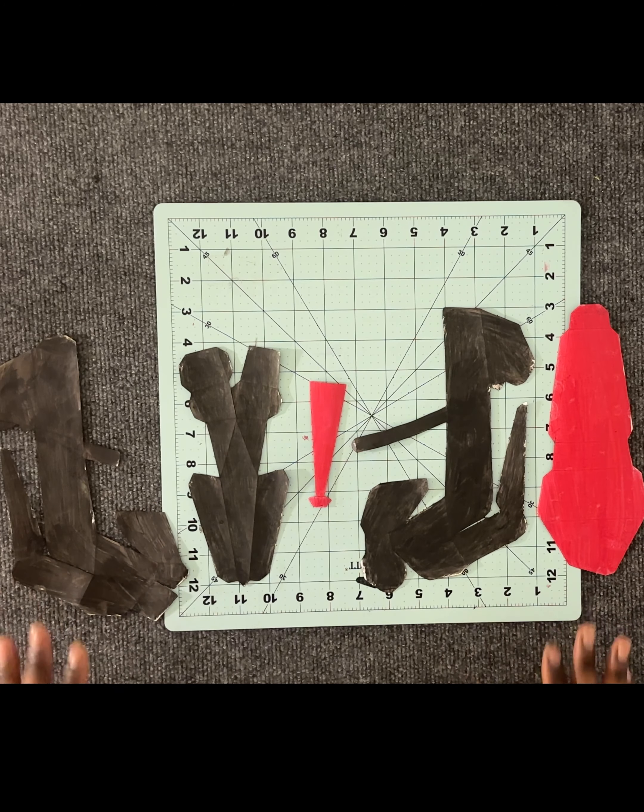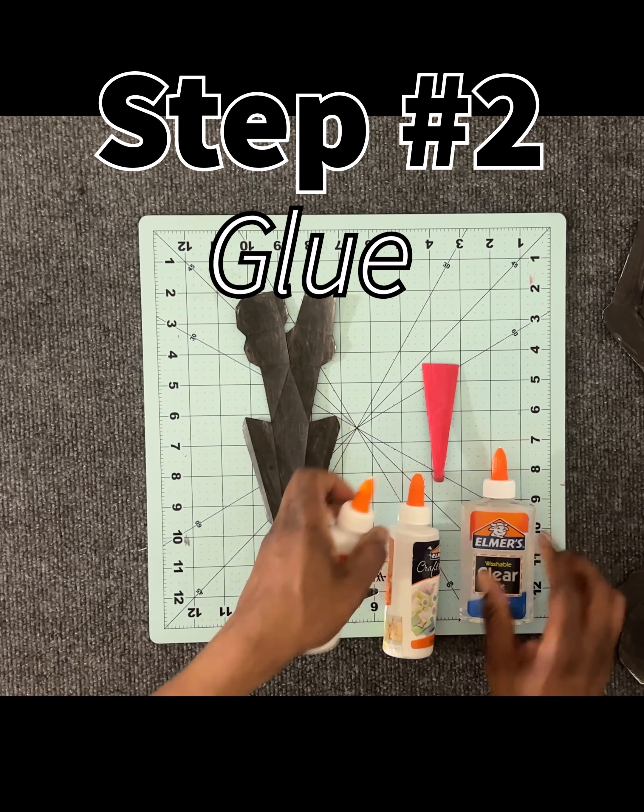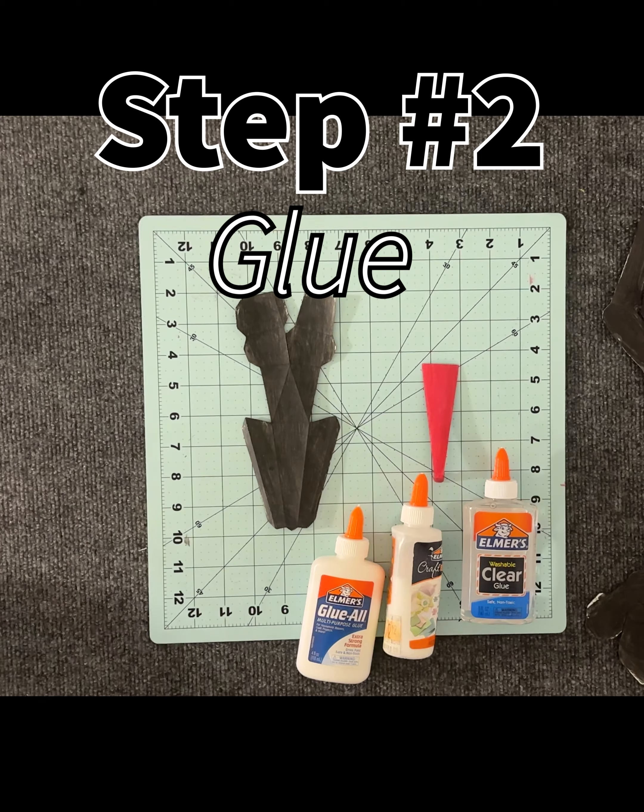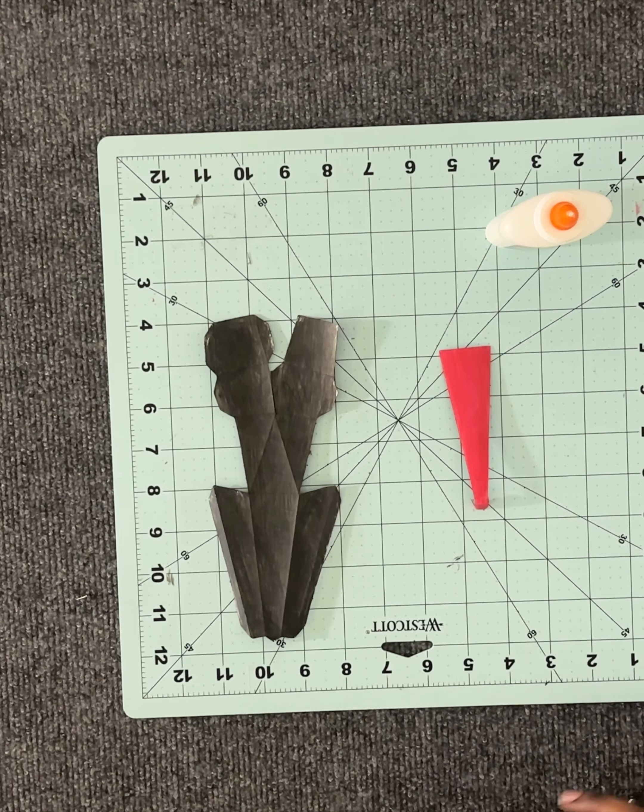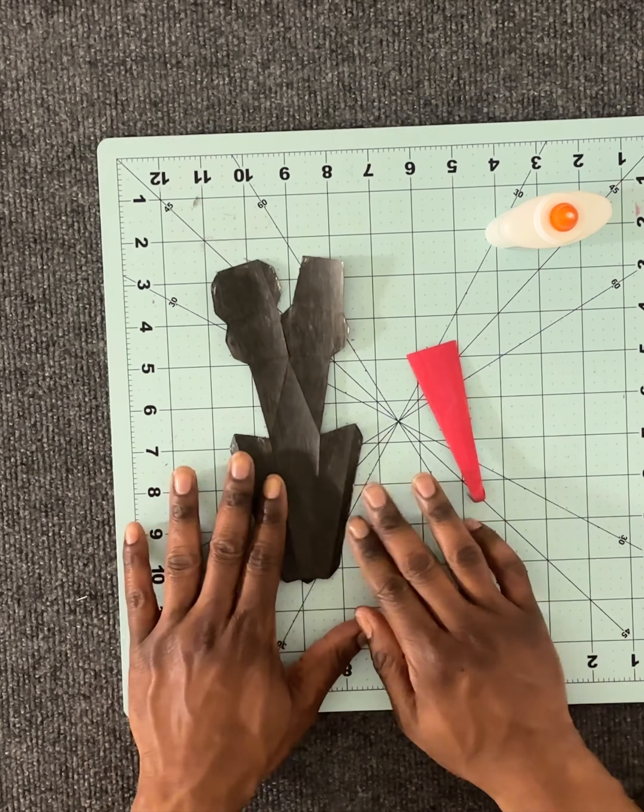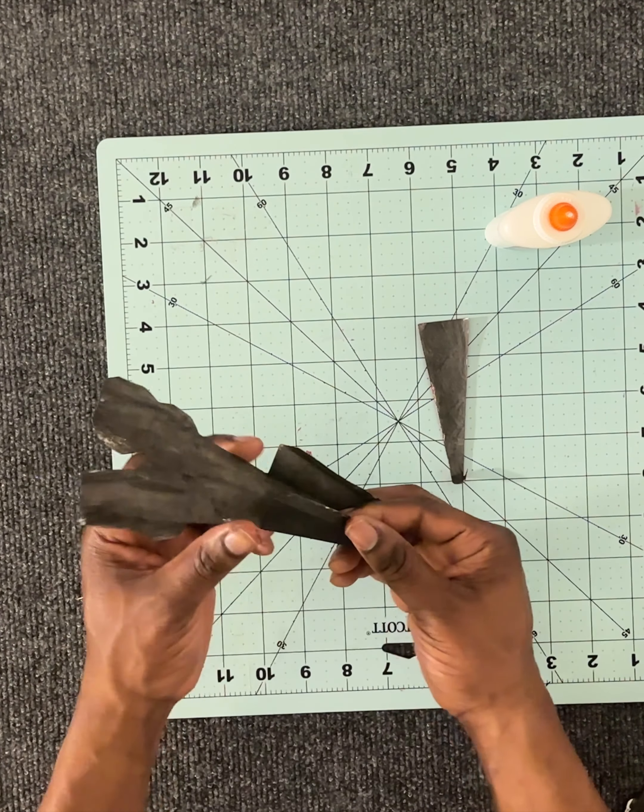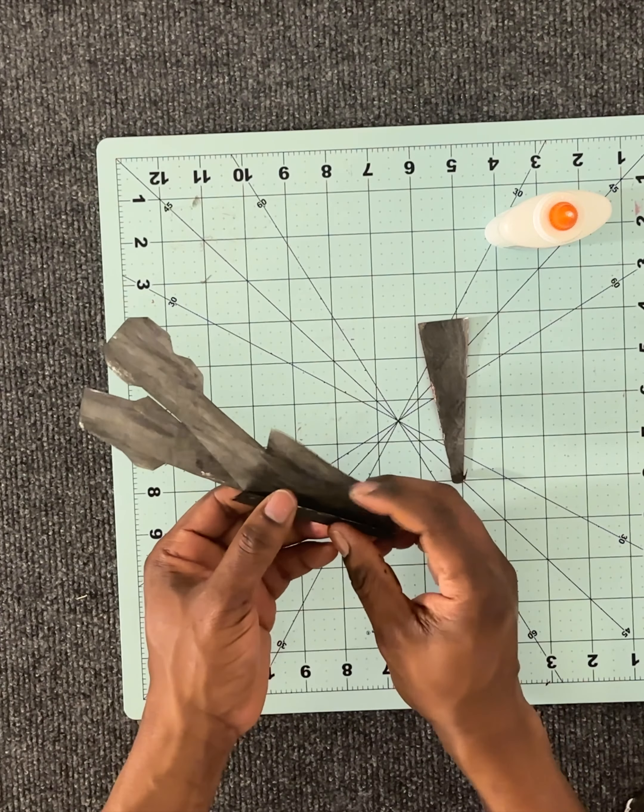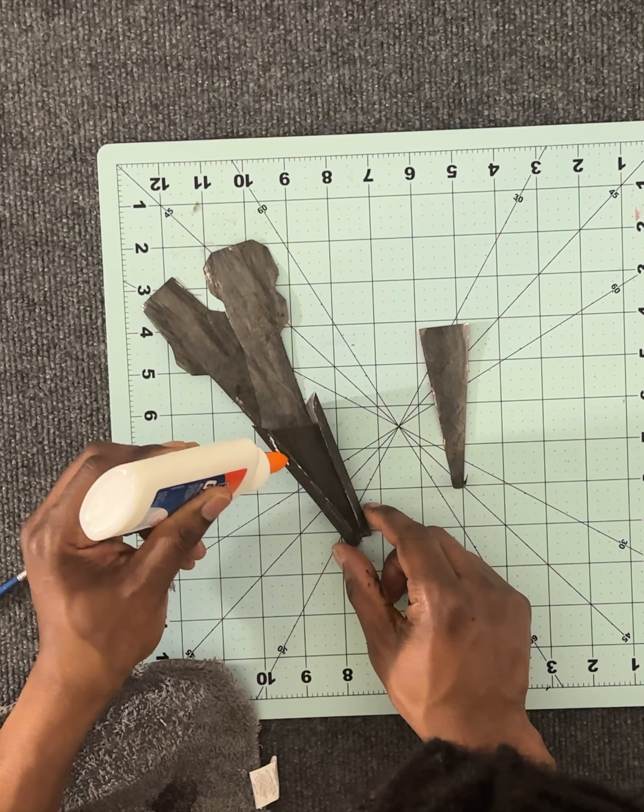As long as you got your pieces just like this you should be okay. Got my glue, plain white glue, that'll work perfect. The first thing I would do is put the heel together. It's already got the creases for you, it's already folded for you. Take my white glue. You don't need that much.